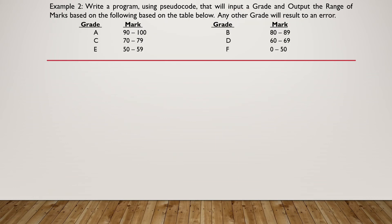Example number 2. Write a program using pseudo code that will input a grade and output the range of marks based on the following table. Any other grade will result to an error. Pretty much similar to our previous question. Here, instead of having a category, we are having a grade. So we are going to input the grade first.